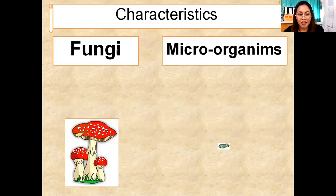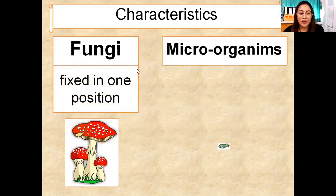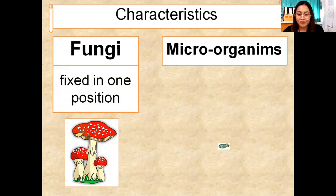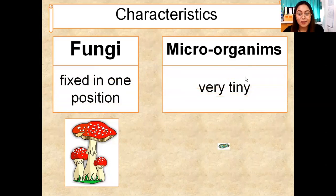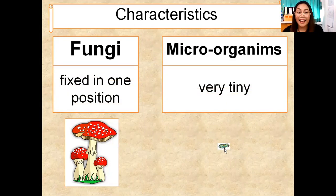What are the characteristics of fungi? Fungi are fixed in one position, same as the plant — they cannot walk, cannot run, cannot fly. Fixed in one position. Microorganisms are very tiny, very small, and you cannot see them with your eyes.